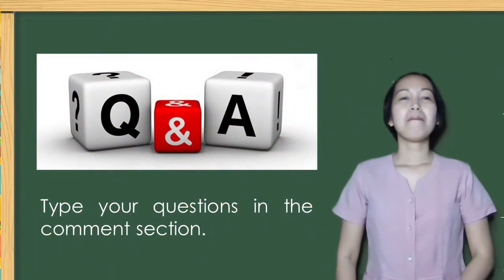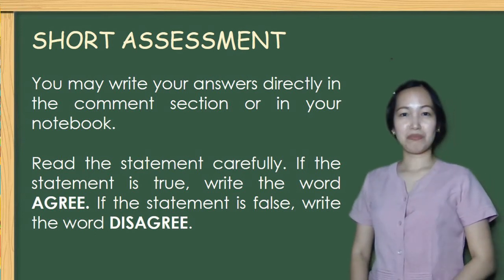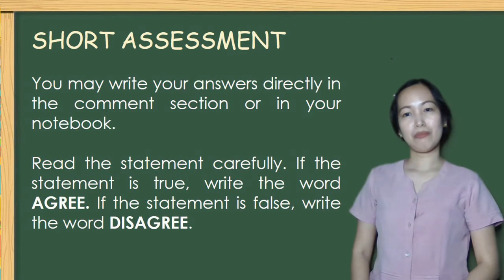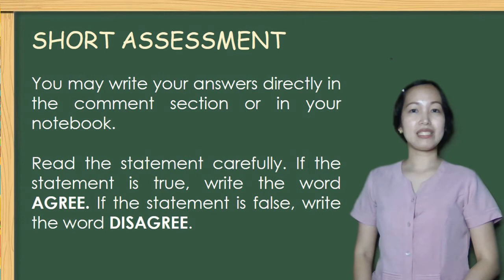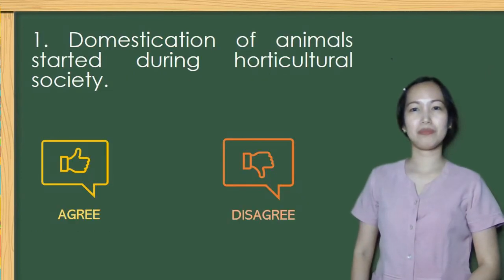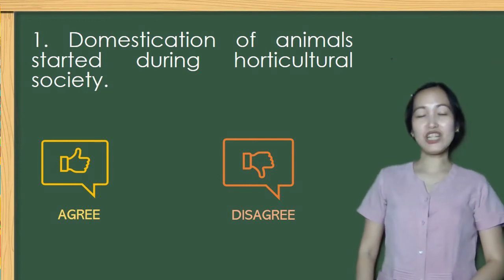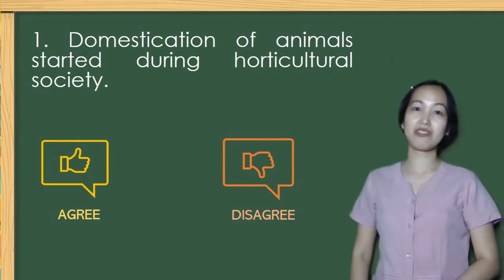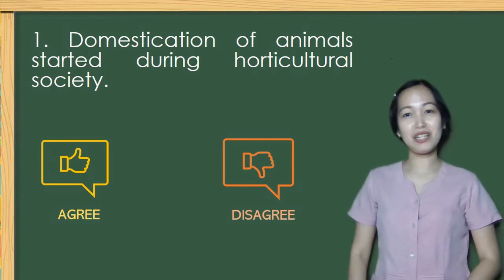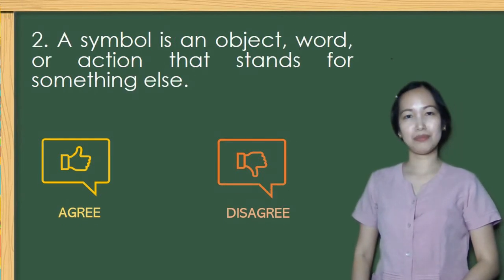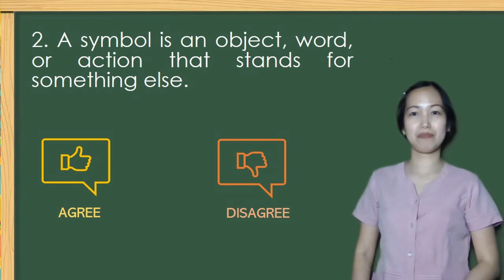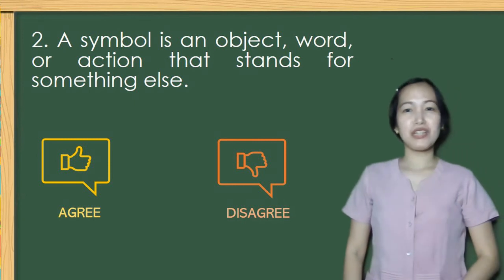Let us now proceed to our short assessment. You may write your answers directly in the comment section or in your notebook. Read each statement carefully — if the statement is true, write the word agree; if false, write disagree. Number 1: Domestication of animals started during horticultural society. Number 2: A symbol is an object, word, or action that stands for something else. If your answer is agree, you are correct.